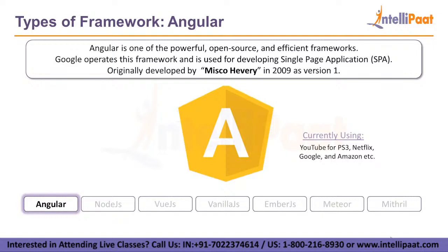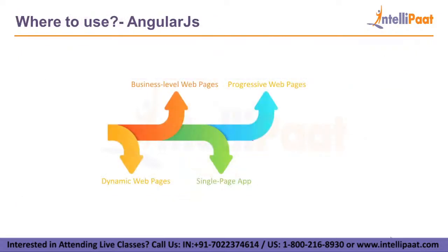The companies currently using Angular include CricBuzz, Google, Amazon, YouTube for PS3, Netflix, and many more. Where to use this framework? You can develop things like dynamic webpages, business-level webpages, single-page applications, and progressive web applications.